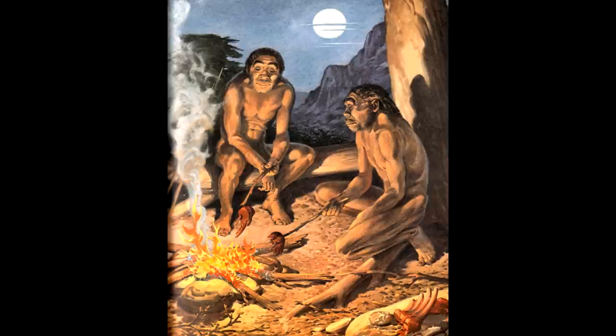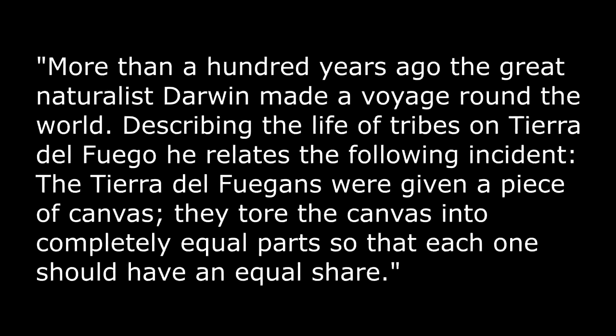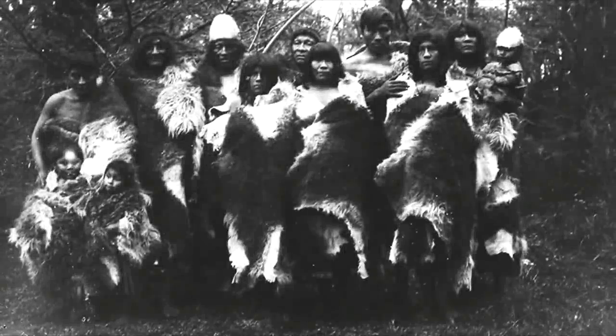You can imagine people spending their day collecting food, putting it into a big collective pile, and at the end of the day everybody would take an equal piece. This has actually been observed by scientists. The book cites Darwin: 'More than a hundred years ago, the great naturalist Darwin made a voyage around the world. Describing the life of tribes on Tierra del Fuego, he relates the following incident. The Tierra del Fuegans were given a piece of canvas. They tore the canvas into completely equal parts, so that each one should have an equal share.' This is strong evidence that the custom of equally sharing all products was deeply ingrained in these tribal peoples.